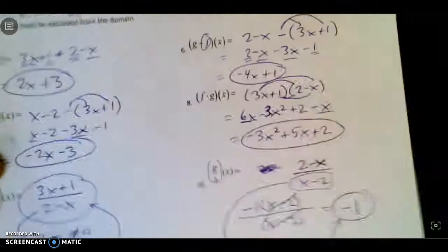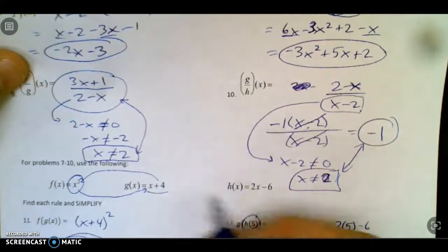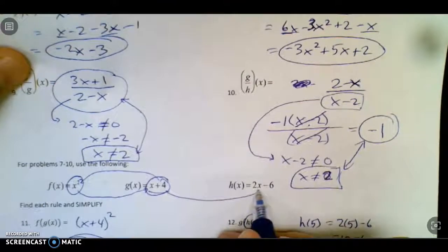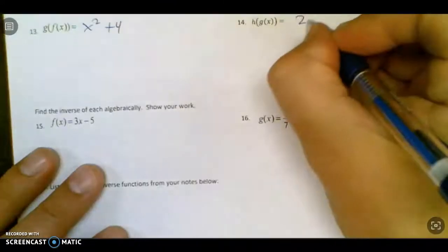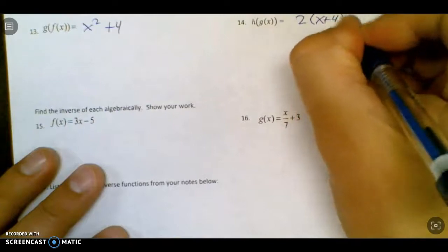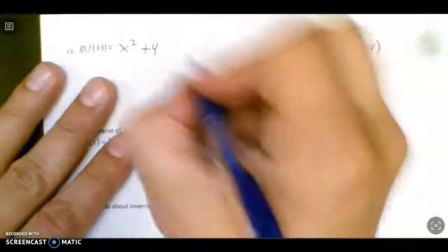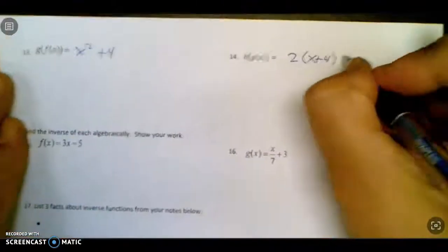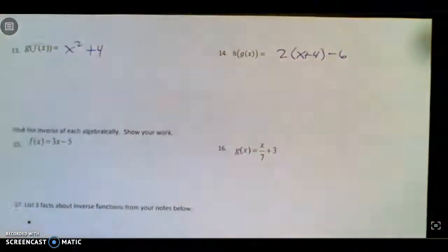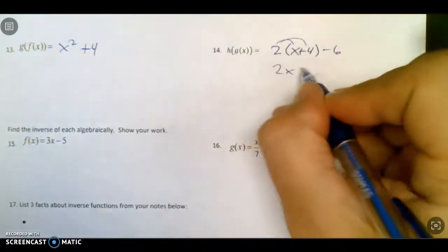h of g of x. So we look at h of x. And we're going to plug a g of x in there. So this guy's going in there. So it's going to be 2 times x plus 4 minus 6.